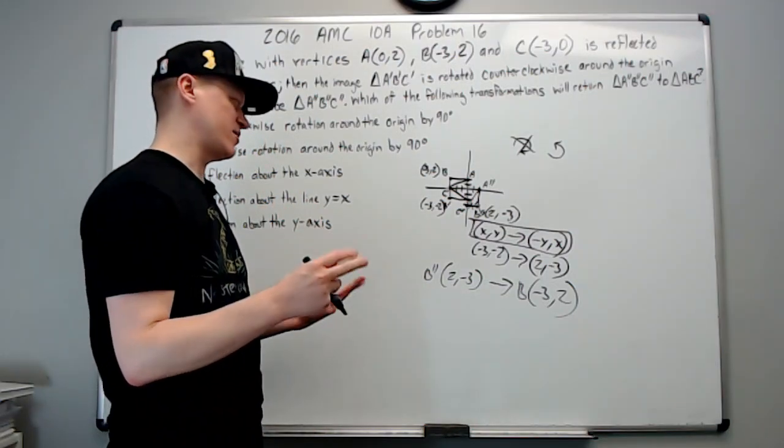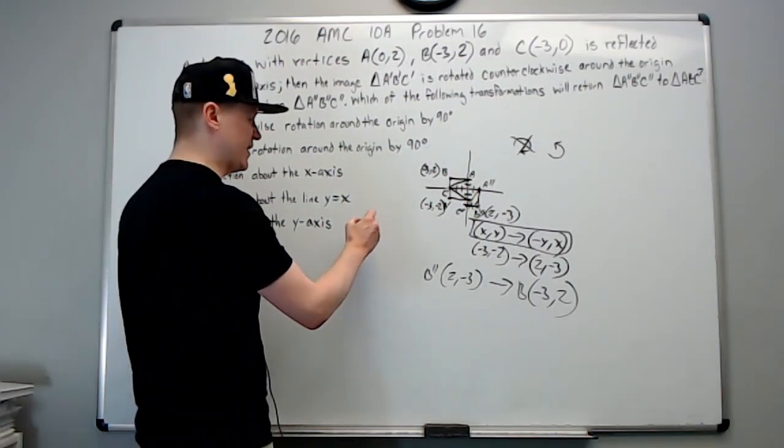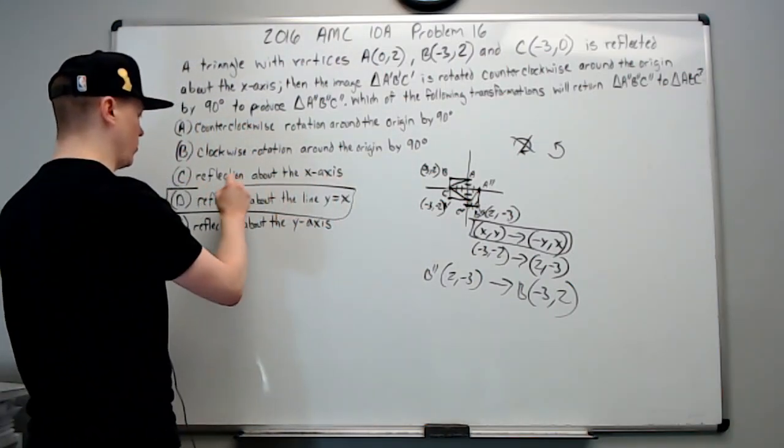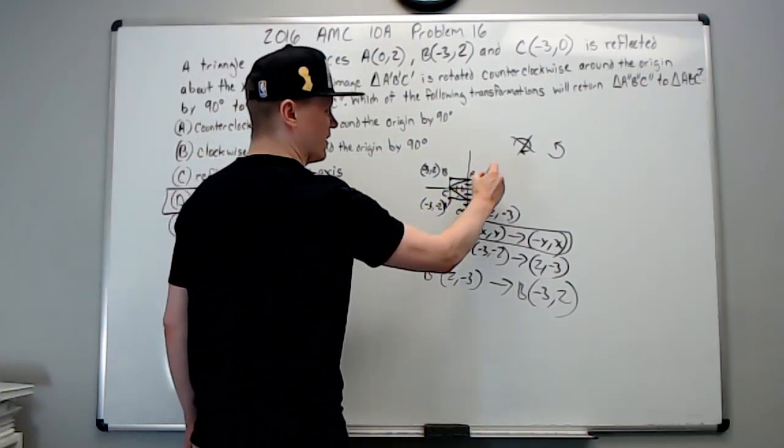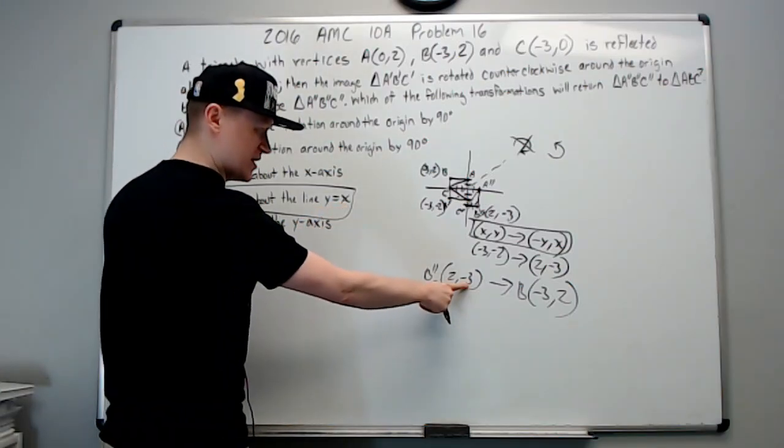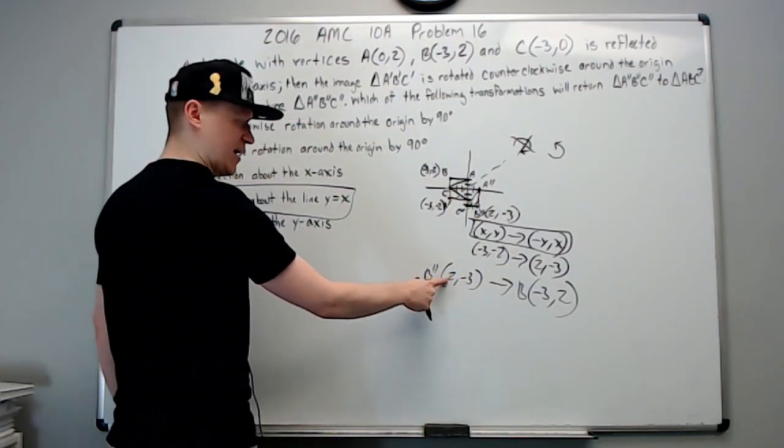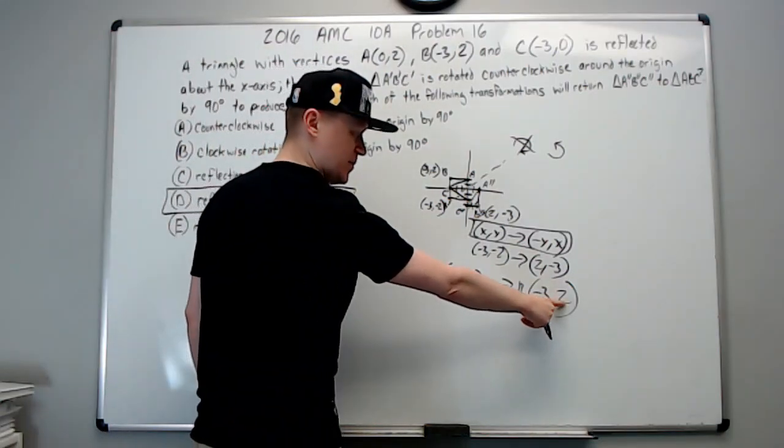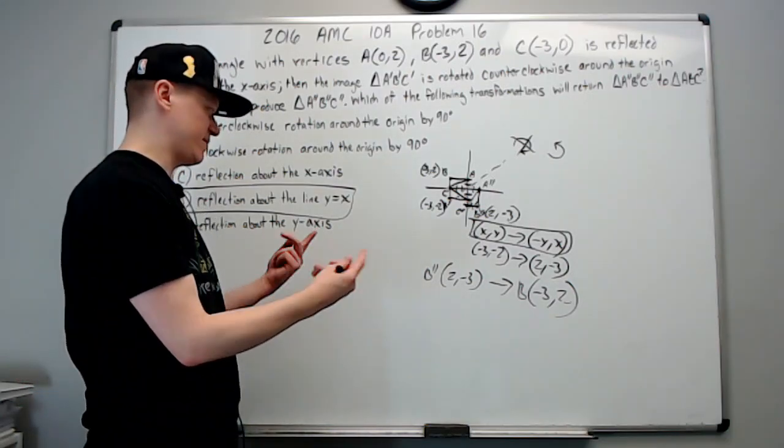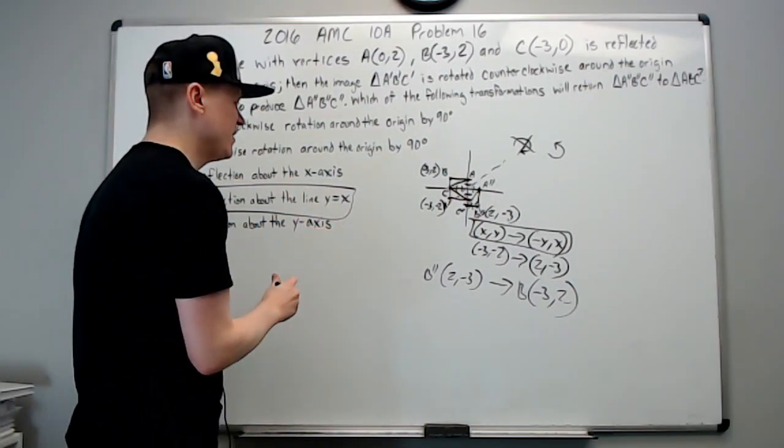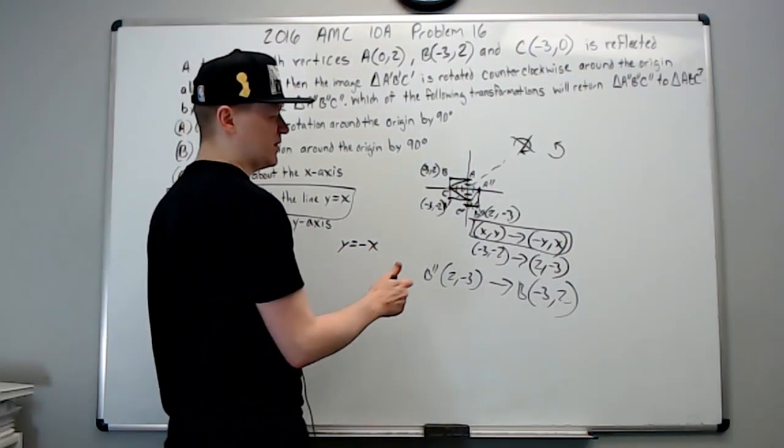There's two transformations I choose to remember: a reflection in the line y equals x, which is going to be the answer. It does kind of exactly what you think - literally y is now equal to x, so this is why it's now equal to x, and x which was here is now equal to y, so it becomes the y coordinate. It's one of the easiest transformations to remember because they just switch spots.